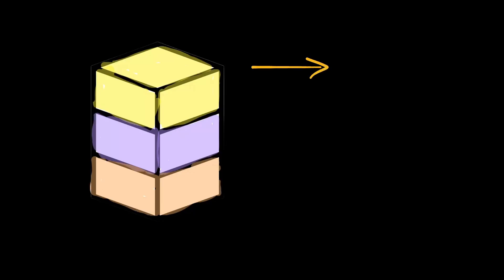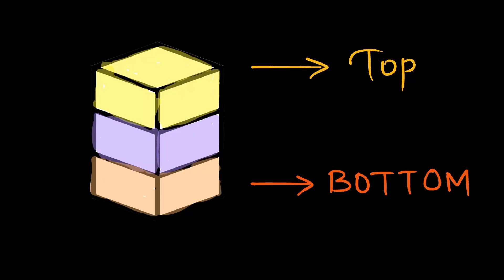Let's say we have this tower. It's a small tower with just three blocks. What is at the top of the tower? The yellow block is at the top of the tower. And if we talk about the bottom of the tower, we see this orange-looking block at the bottom. This is the basic concept of top and bottom.